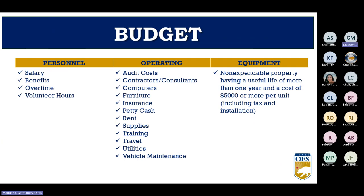The personnel category is for salaries, benefits, and overtime for people you employ at your agency, and also where you put volunteer hours. The operating category is the meat and potatoes of your program — put just about everything else here, including rent, travel, training, and office supplies. The equipment category is for non-expendable property with a useful life of more than one year and a cost of $5,000 or more per unit. For example, six laptops at $1,000 each would go in operating expenses, not equipment, since each is under $5,000 per unit.